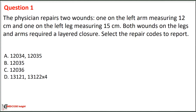Practice question one: The physician repaired two wounds — one on the left arm measuring 12 cm and one on the left leg measuring 15 cm. Both wounds on the leg and arm required a layered closure. Select the repair codes to report. Option A: 12034 and 12035. Option B: 12035. Option C: 12036. Option D: 13121 and 13122.